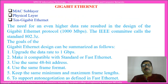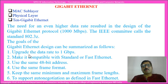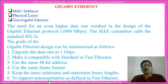The next one is Gigabit Ethernet. The need for even higher data rates resulted in the design of the Gigabit Ethernet protocol, which works at 1000 Mbps or 1 Gbps. The IEEE committee calls the standard 802.3z. The goals of Gigabit Ethernet design are: upgrade the data rate to 1 Gbps; make it compatible with standard or Fast Ethernet; use the same 48-bit address; use the same frame format; keep the same minimum and maximum frame length; and support auto-negotiation as defined in the first Ethernet.